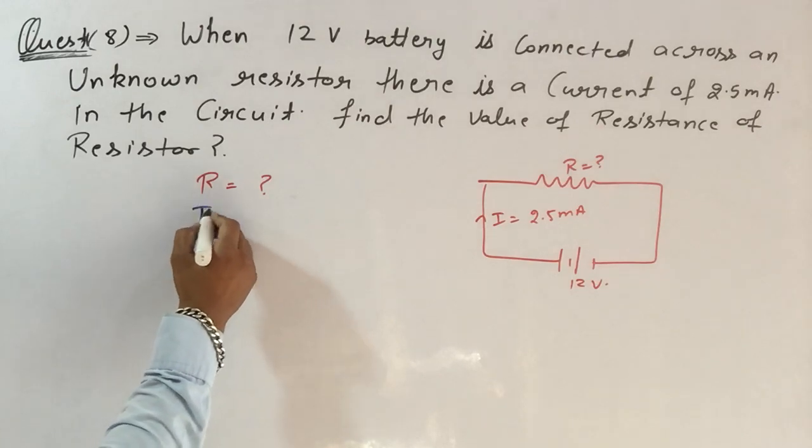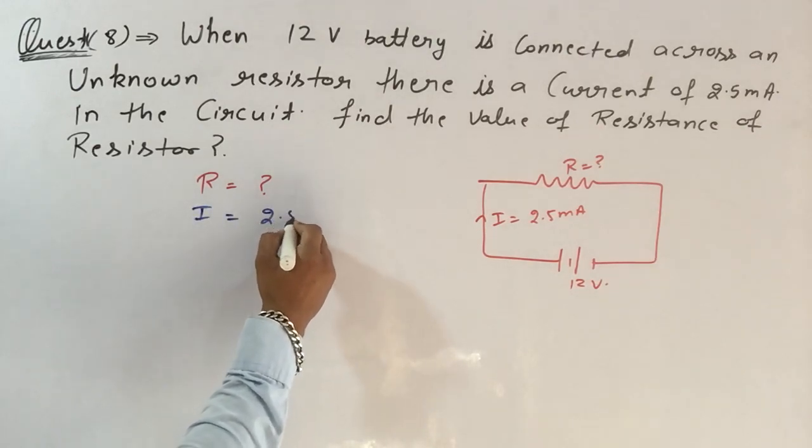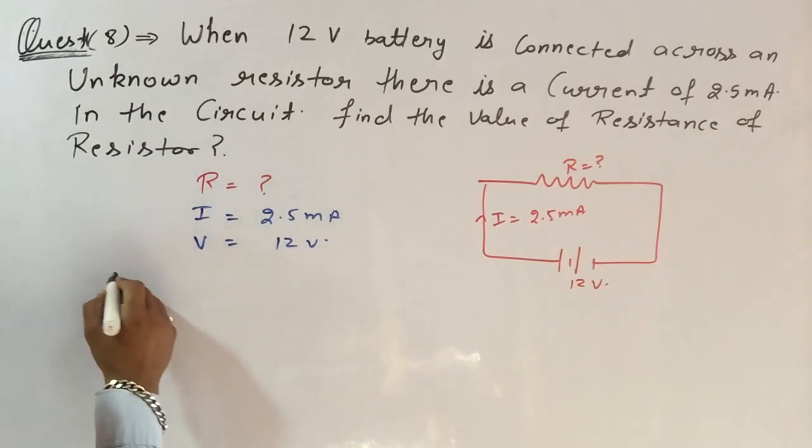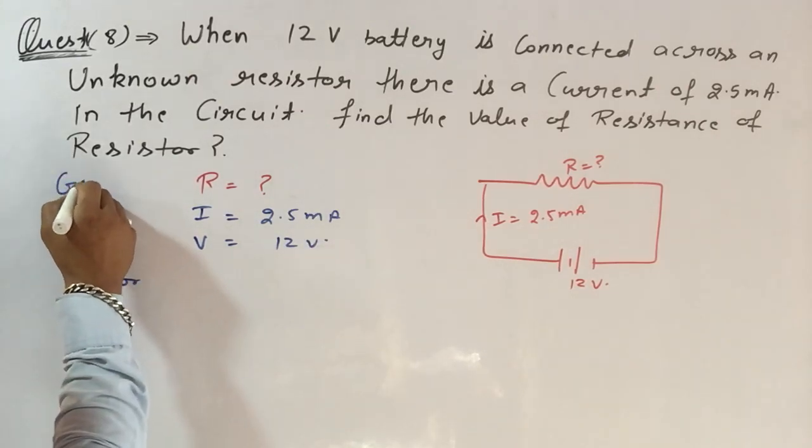Current is given which is 2.5 milliamperes, potential is given which is 12 volts. We have to find only resistance.